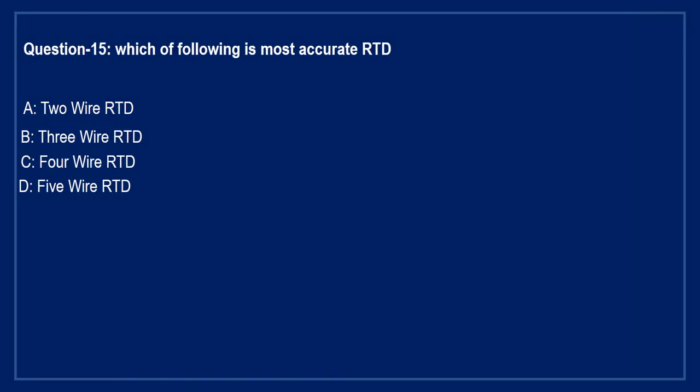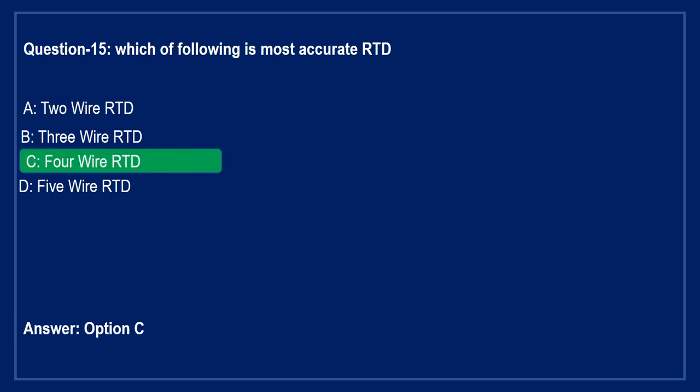Next question: which of the following is the most accurate RTD? Option A: 2-wire RTD. Option B: 3-wire RTD. Option C: 4-wire RTD. Option D: 5-wire RTD. The correct answer is Option C, 4-wire RTD. Yes friends, 4-wire RTD is the most accurate because in 4-wire RTD, the lead resistance is minimized.